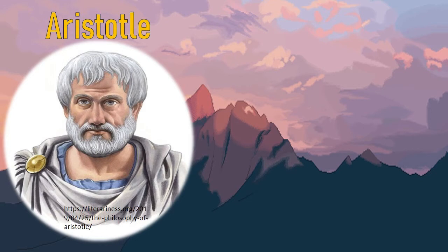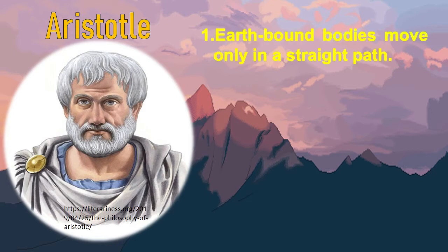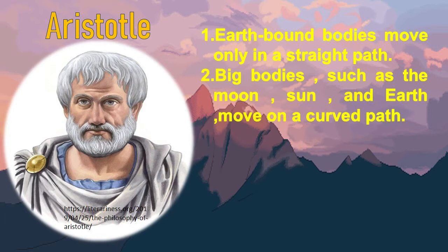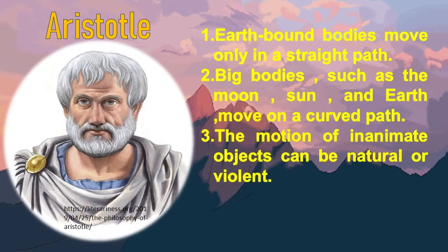Aristotle's view on motion can be summarized as follows. Number 1: Earth-bound bodies move only in a straight path. Big bodies, such as the moon, sun, and earth, move on a curved path. The motion of inanimate objects can be natural or violent.